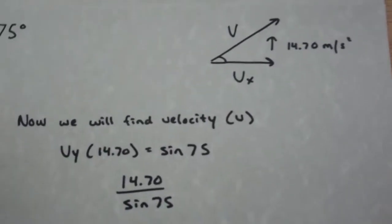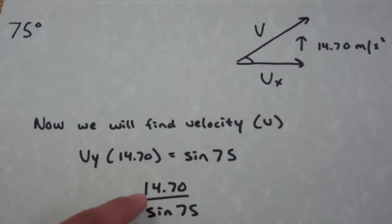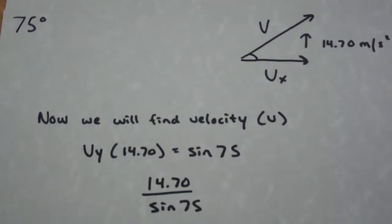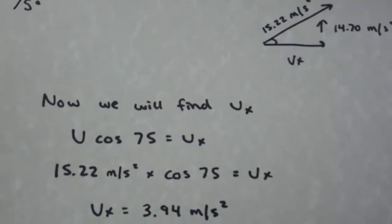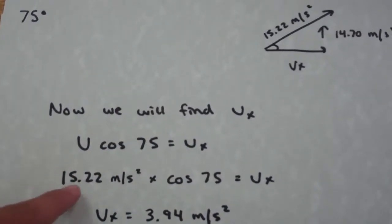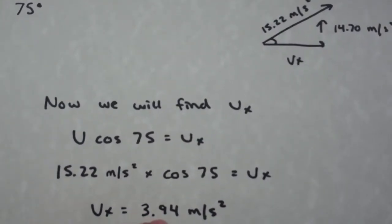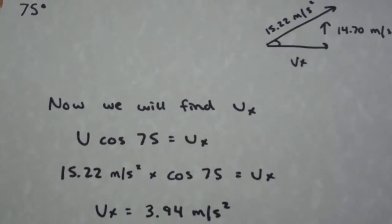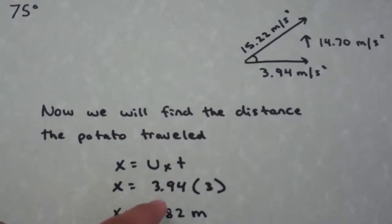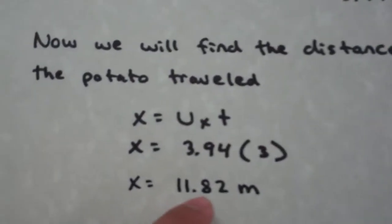To find the regular velocity, we take the vertical velocity of 14.7 equal to the sine of 75 degrees. We divide 14.7 by the sine of 75 to get 15.22 meters per second for velocity. Now we will find the horizontal velocity: V times the cosine of 75 degrees equals the horizontal velocity. 15.22 is our velocity times the cosine of 75, so we get a horizontal velocity of 3.94 meters per second. For the horizontal velocity of 3.94 times the time of 3 seconds, we get a distance of 11.82 meters.